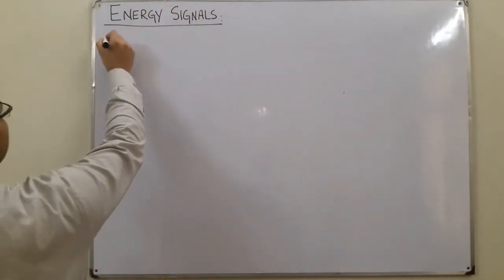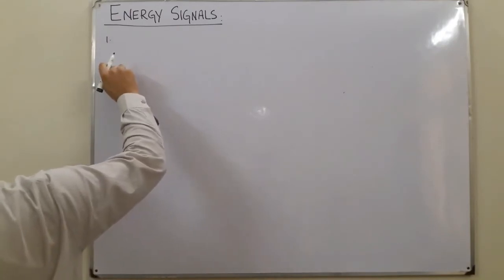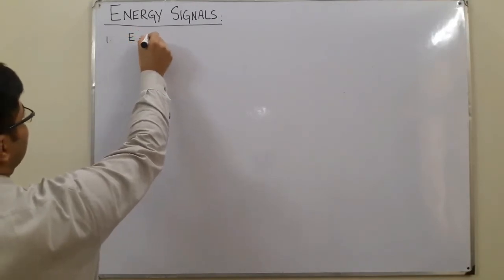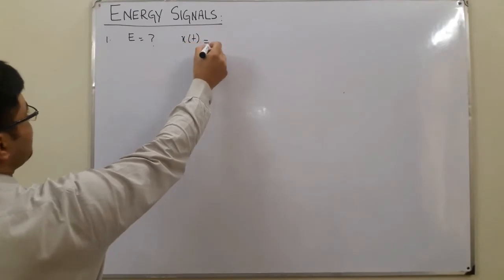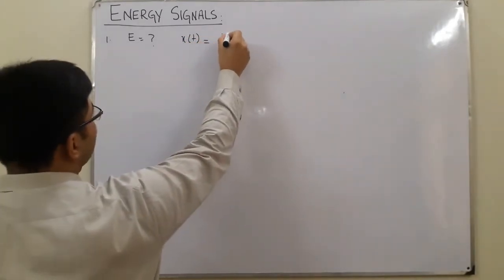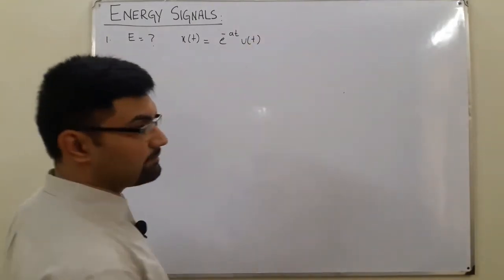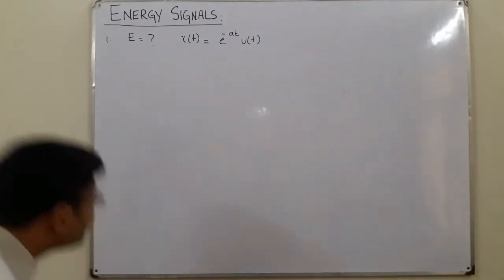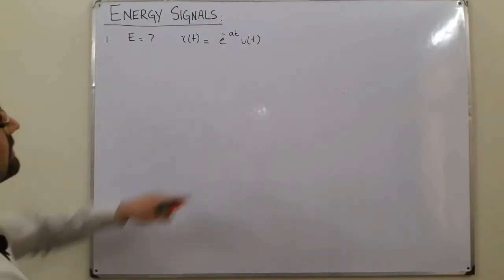We are given a question to find the total energy of the following signal. We are asked to find the energy of the signal x(t), which is equal to exponential of negative a*t multiplied by the unit step signal u(t). This is our signal for which we have to find the energy. Note that we have a constant 'a' here.